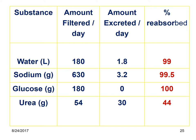Normally glucose does not appear in urine, so there is 100 percent reabsorption. It is only in diabetes mellitus that sugar starts appearing in the urine. For urea: around 54 grams per day is filtered, 30 grams is excreted, and 30 grams is reabsorbed — therefore roughly around 44 percent is reabsorbed.